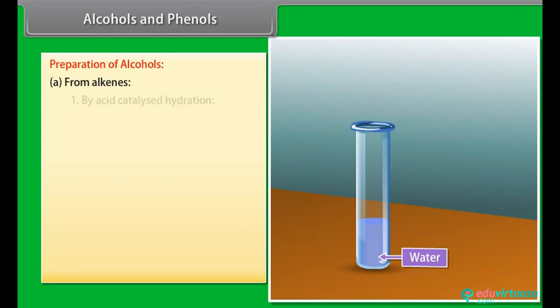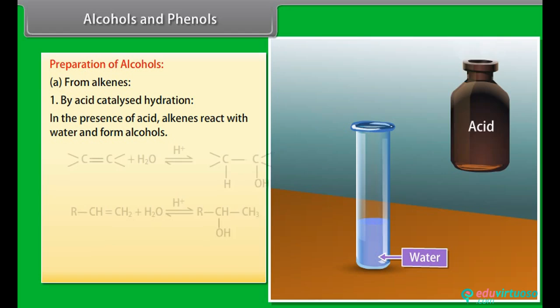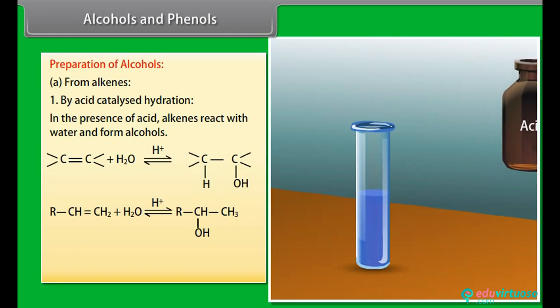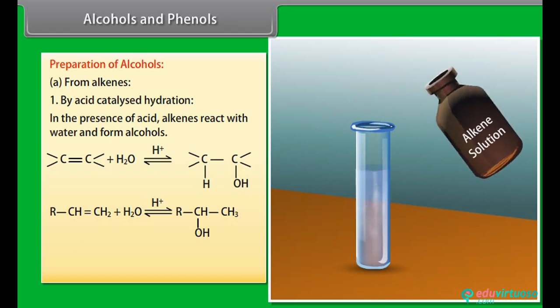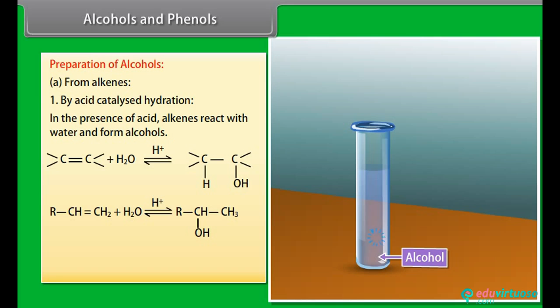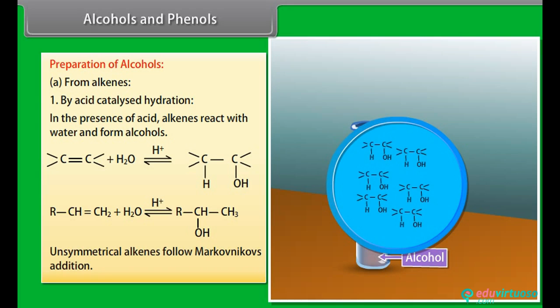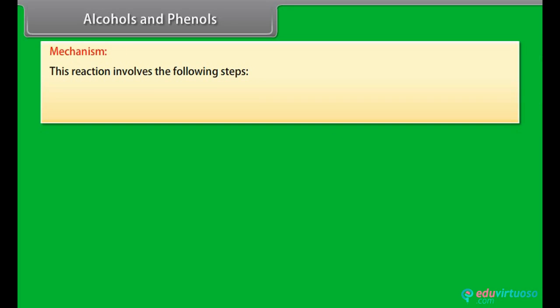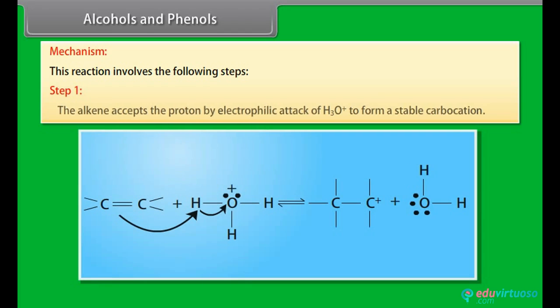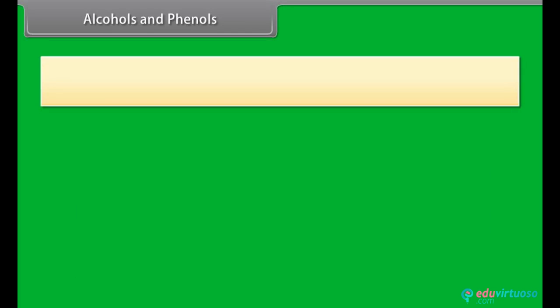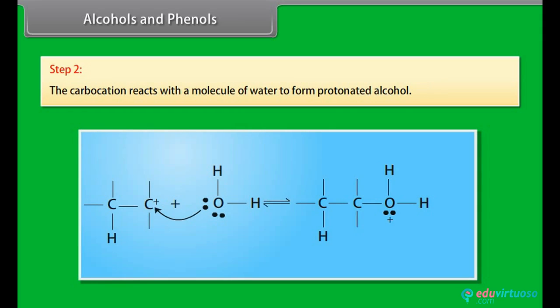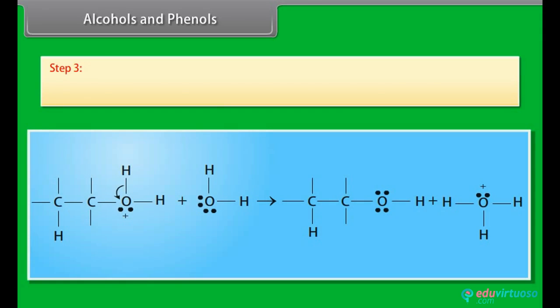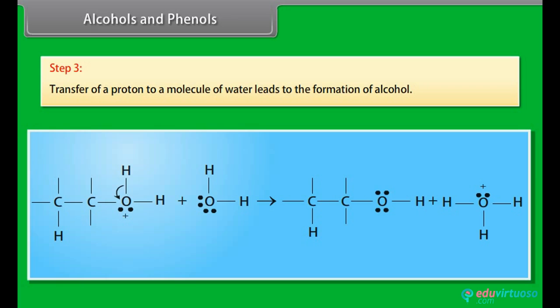Preparation of alcohols from alkenes by acid-catalyzed hydration. In the presence of acid, alkenes react with water to form alcohols. Unsymmetrical alkenes follow Markovnikov's addition. The mechanism involves the following steps: Step 1 — the alkene accepts a proton by electrophilic attack of a hydronium ion to form a stable carbocation; Step 2 — the carbocation reacts with a molecule of water to form a protonated alcohol; Step 3 — transfer of a proton to a molecule of water leads to the formation of the alcohol.